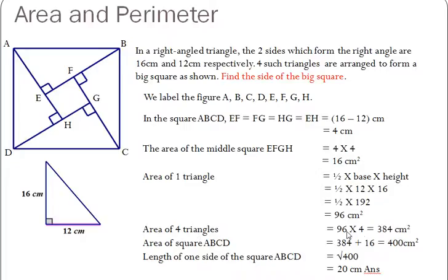The area of four triangles would be 96 times 4, which is 384 cm².